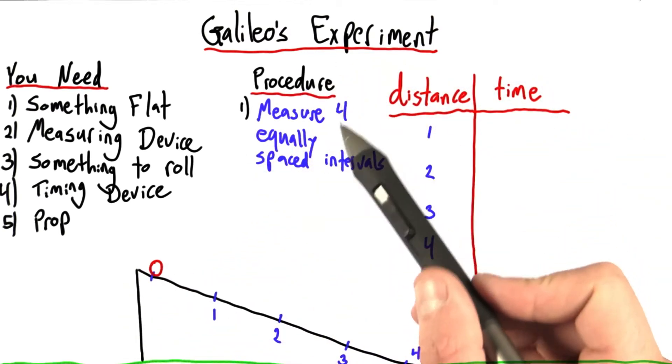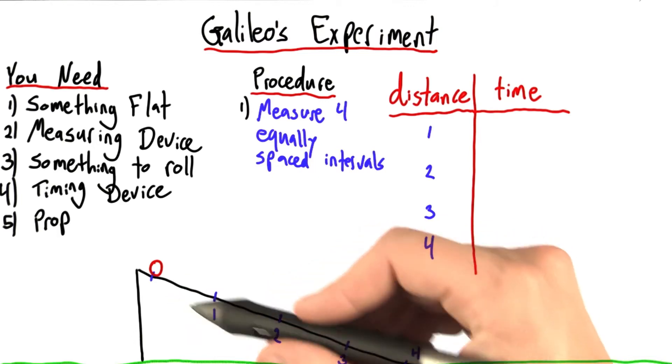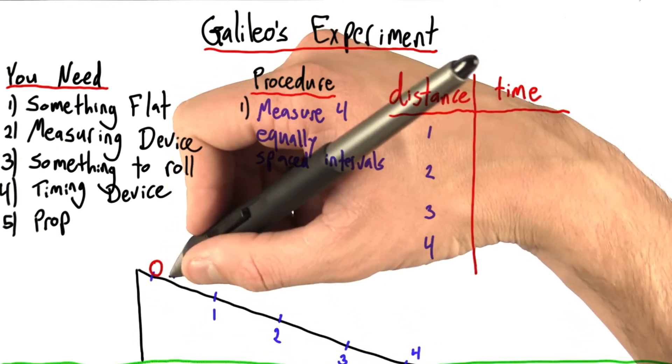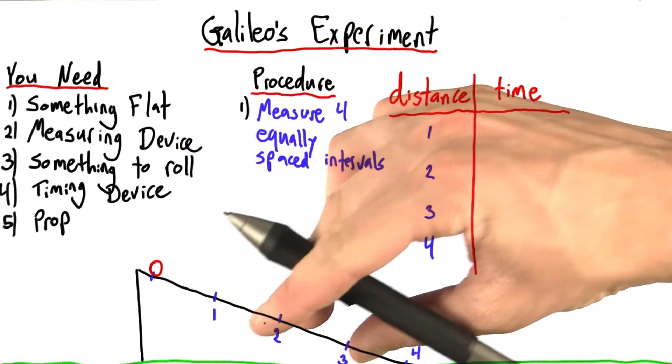To actually do this experiment, first you're going to need to measure four equally spaced intervals on your flat object. And actually, it doesn't matter what units you use. These could be one meter, or it could be two centimeters. As long as you're consistent, as long as the spacing is the same each time.